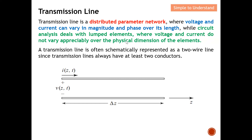Circuit analysis deals with lumped elements where voltage and current do not vary over the physical dimension of the element. For DC analysis, if we imagine a cable, we don't consider any changes in voltage and current — whatever voltage we supply, we assume the current is uniform throughout in both magnitude and phase. This is valid because the wavelength is so much longer than the cable length, so there's no significant difference at any point.